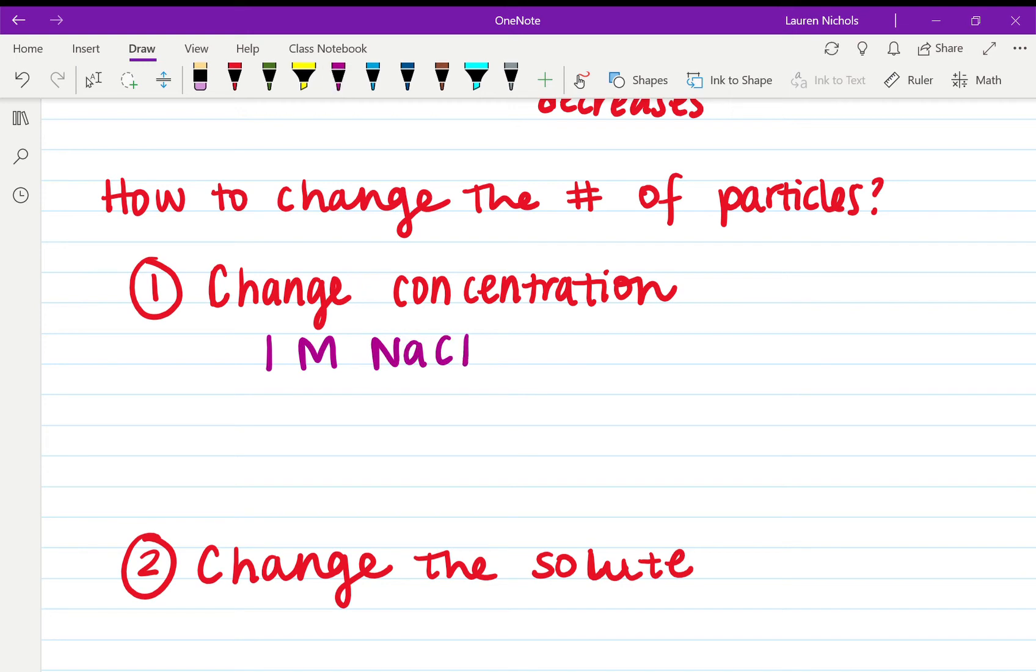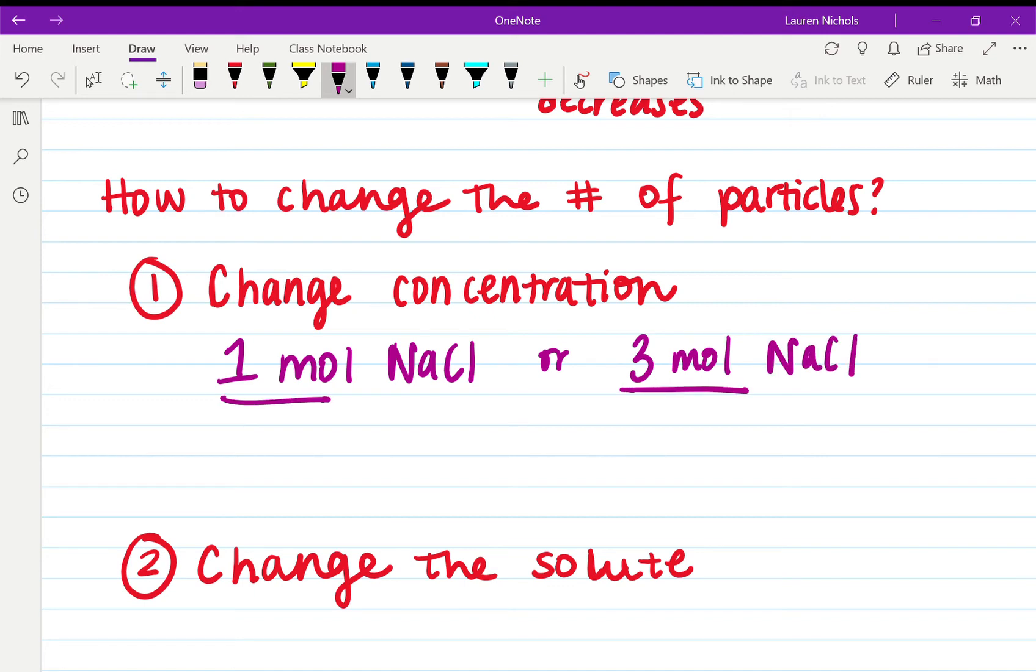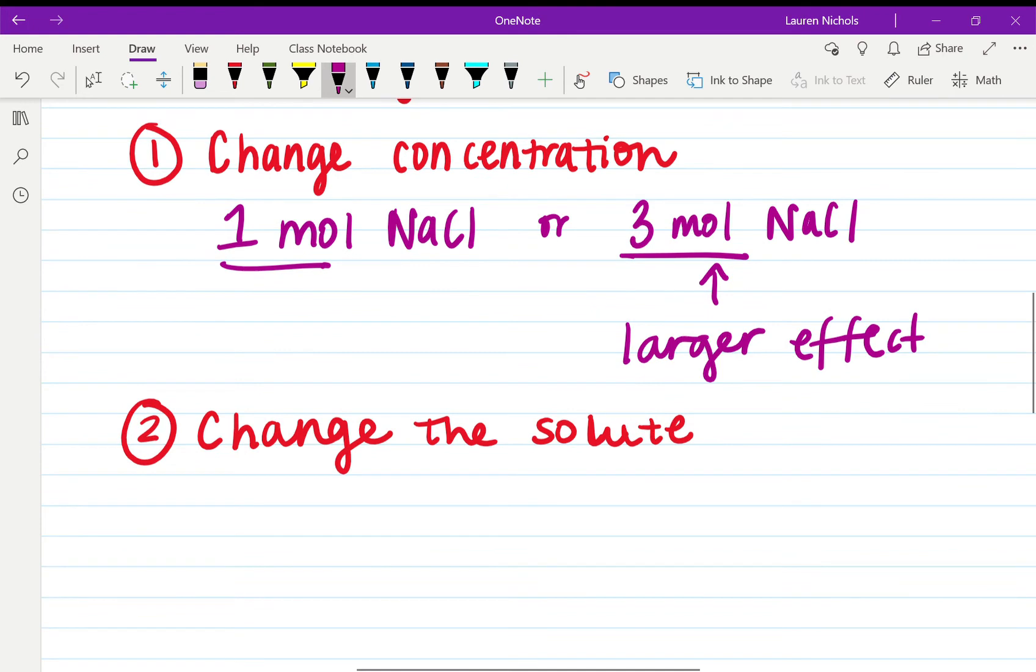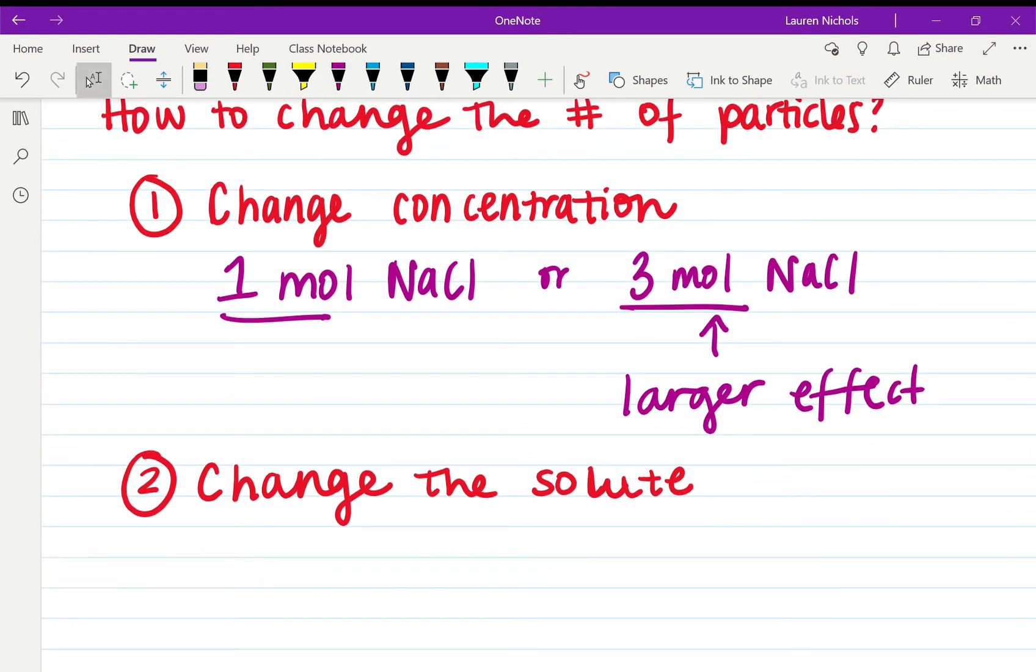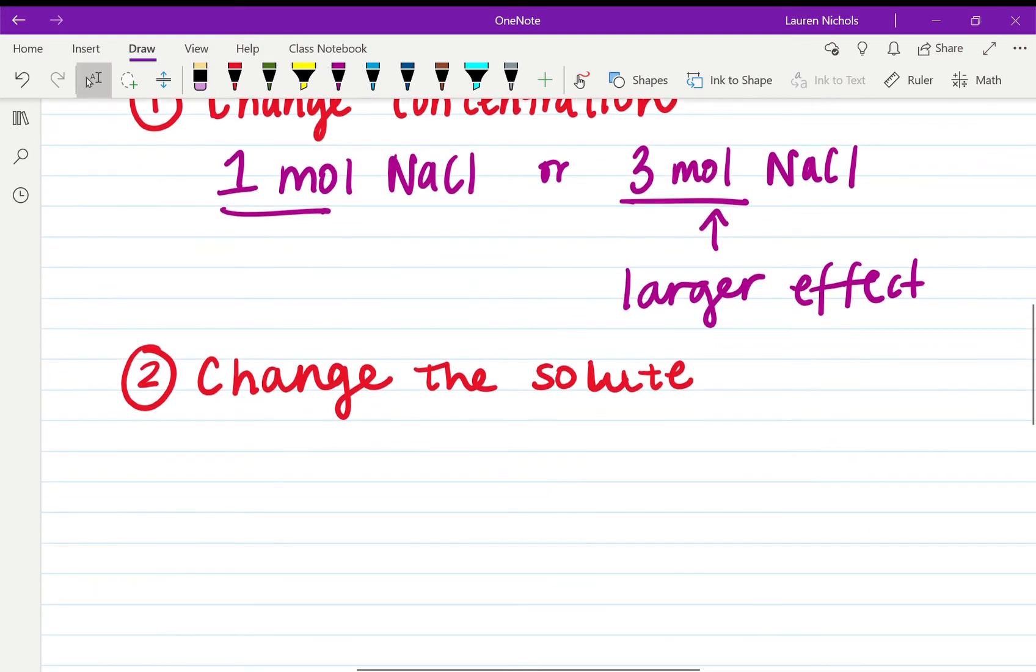For example, I could add just one mole of sodium chloride or I could add three moles of sodium chloride. Well this is more moles than this one, so this would have a larger effect. Meaning that if I have three moles of sodium chloride in one water solution and one mole of sodium chloride in another solution, the one with three is going to have a higher boiling point and a lower freezing point than the one with just one.